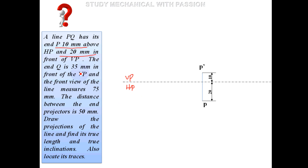The end Q is 35mm in front of VP. The distance between end projectors is 50mm — meaning the vertical projector through P and the vertical projector through Q are 50mm apart. The front view P-dash Q-dash measures 75mm.